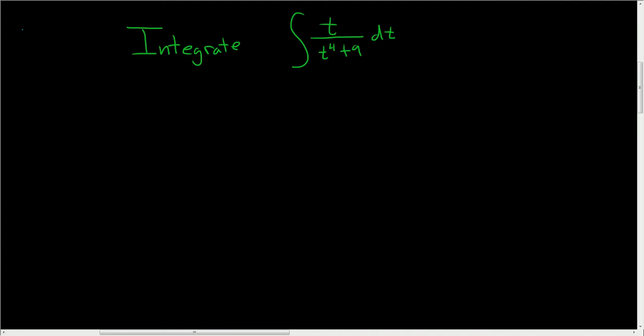So in this problem we have an indefinite integral and the strategy here is to notice that it could lead to an arctan function. If you just try to make a straight u substitution and call this u, your du is going to be 4t cubed so it's going to fail.